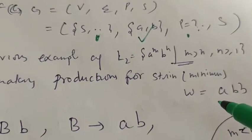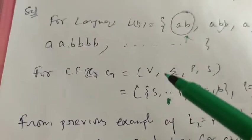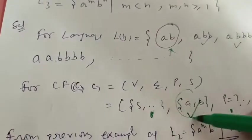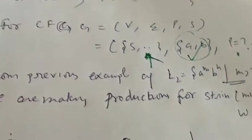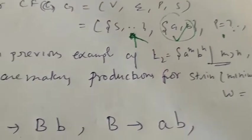Again, w is equal to a, a double b, that is our minimum string. You see this, this is our minimum string, this is not because I have already explained this. Now for this string, w is equal to a double b.